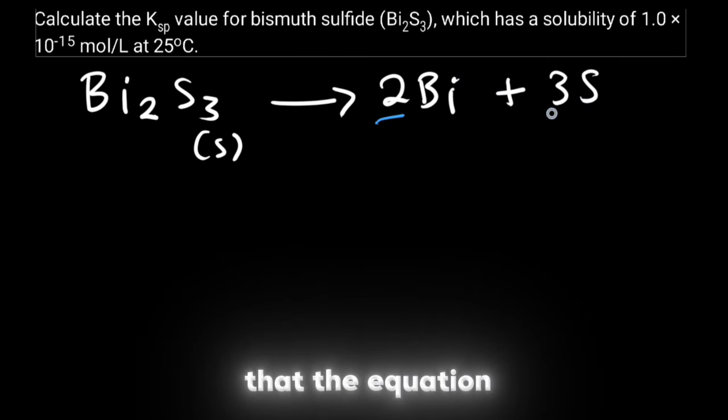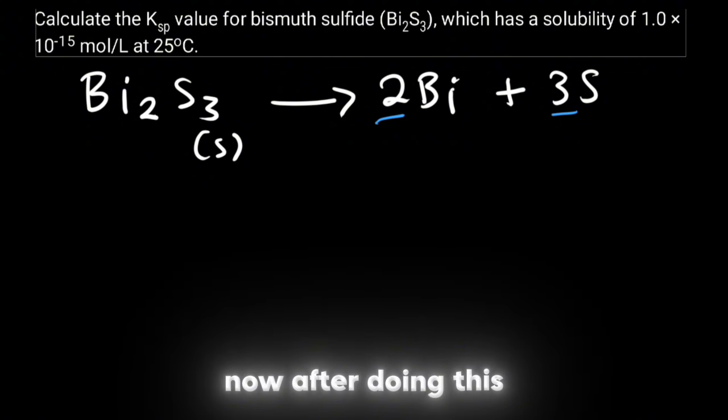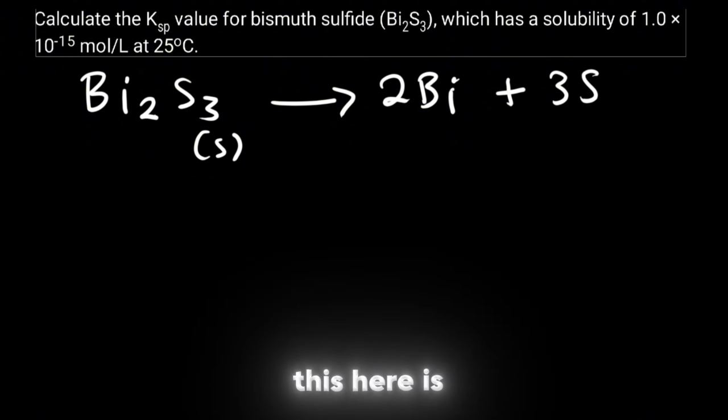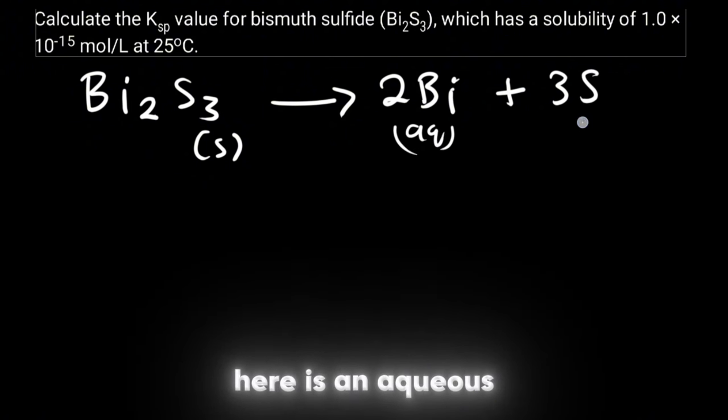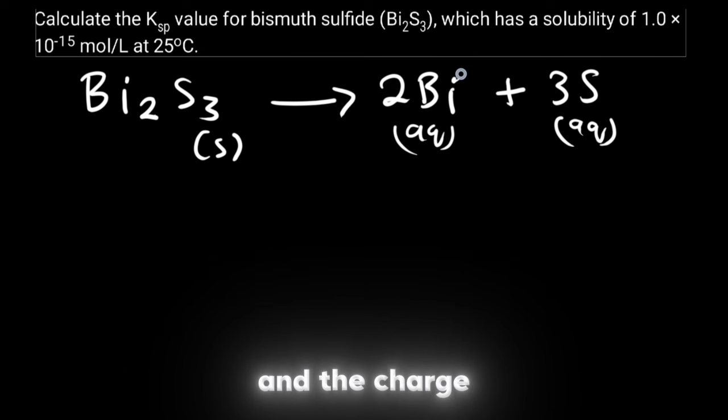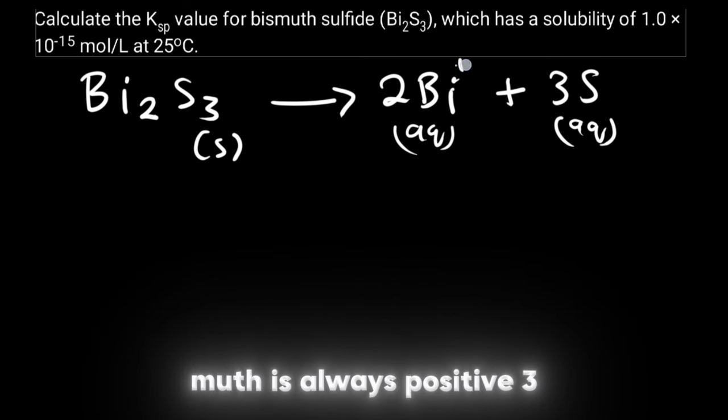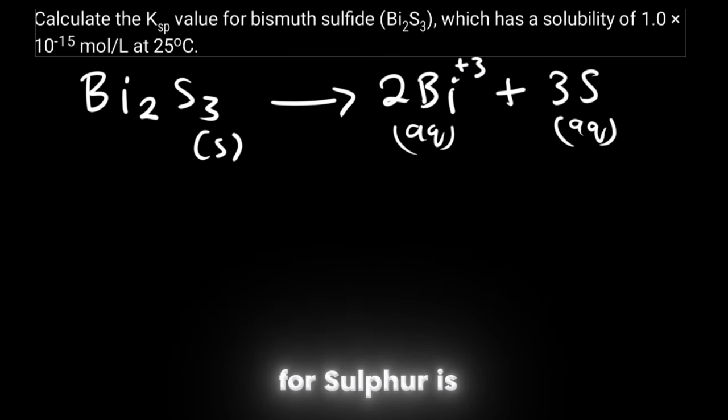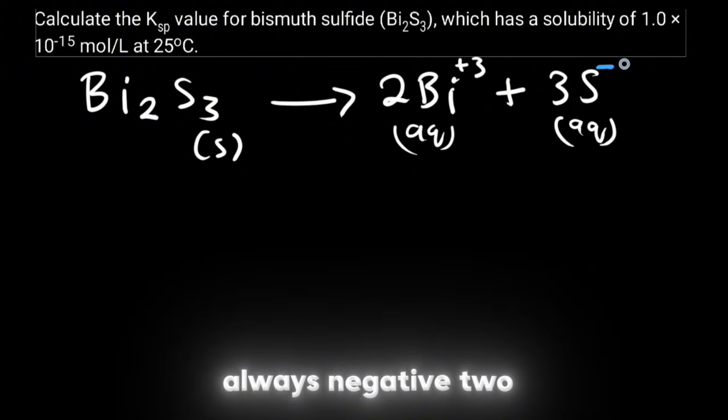Now make sure that the equation is balanced. Now after doing this we know that this here is an aqueous and this here is an aqueous and the charge for bismuth is always positive three and the charge for sulfur is always negative two.